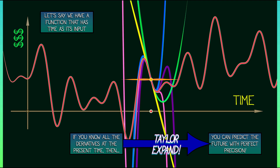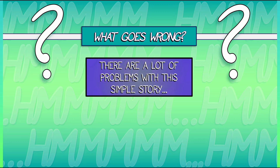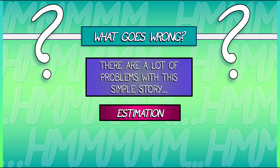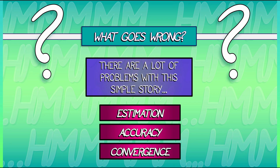Wow! That seems like it could be really useful. But why am I not doing that and making a lot of money? What goes wrong with this picture, besides the fact that divination is dangerous? There are a lot of problems with this simple application of a Taylor expansion formula. How do you estimate all those derivatives? What kinds of accuracy do you need? How many terms do you need in order to get convergence? As we know, that can be a subtle issue.